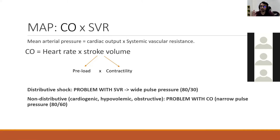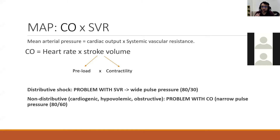Normal blood pressure has two readings: systolic and diastolic. Mean Arterial Pressure is different — it's the average blood pressure throughout the entire body and takes into account both the amount of blood pumped by the heart and the resistance of the blood vessels. Cardiac Output equals Heart Rate times Stroke Volume. Cardiac output is the amount of blood pumped through the entire body by the heart.